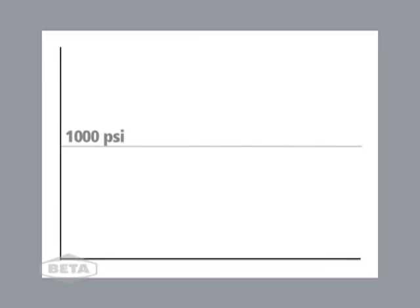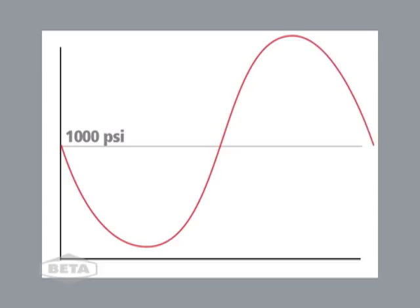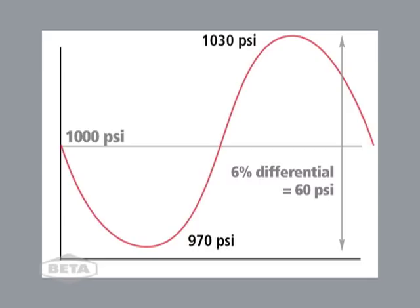The amplitude of these pressure pulsations can vary widely. Let's assume no pulsation control exists, and the pulsation levels can reach a relatively low amplitude of 6% peak to peak. The maximum is 1030 psi, and the minimum is 970. The differential pressure equals 60 psi between maximum and minimum amplitudes.